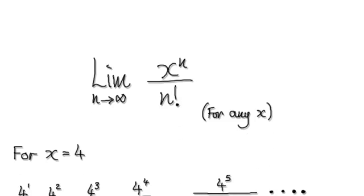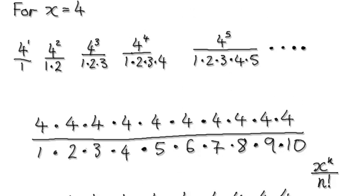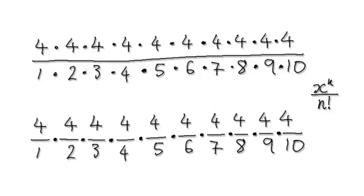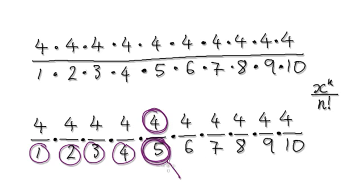Following on from the previous video, there are some things that I need you to notice before I show you the proof. One of the things is that if you look at the denominator, it's always increasing here, and there will come a point where the denominator will be bigger than the numerator. So we're going to call this M.